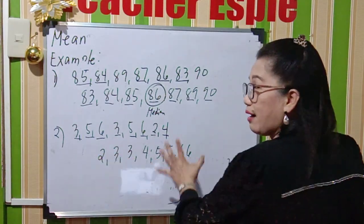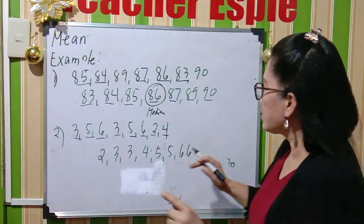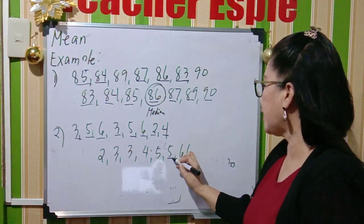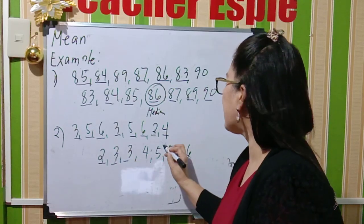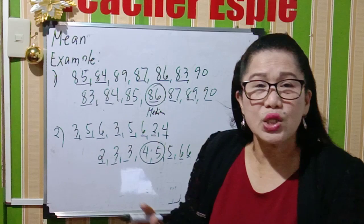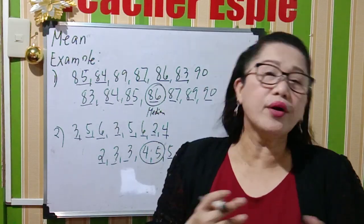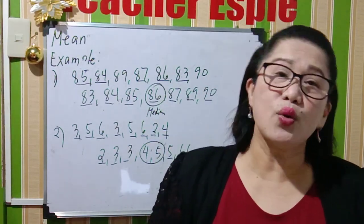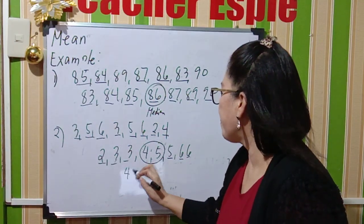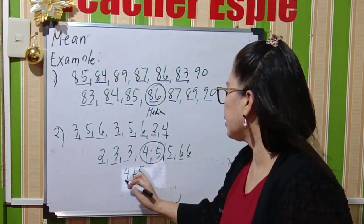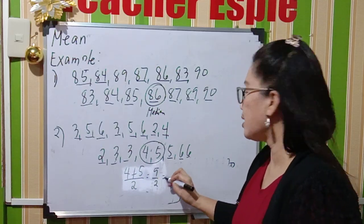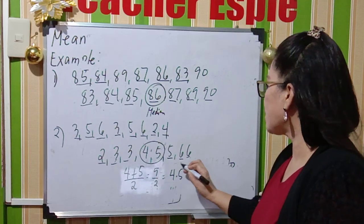Since there are 8 values, you count 3 from the right side and 3 from the left side. From the right: 1, 2, 3, and from the left: 1, 2, 3. Therefore the median falls between 4 and 5. You add the two middle numbers: 4 plus 5 divided by 2, which gives 9 divided by 2 equals 4.5. So 4.5 is now the median.